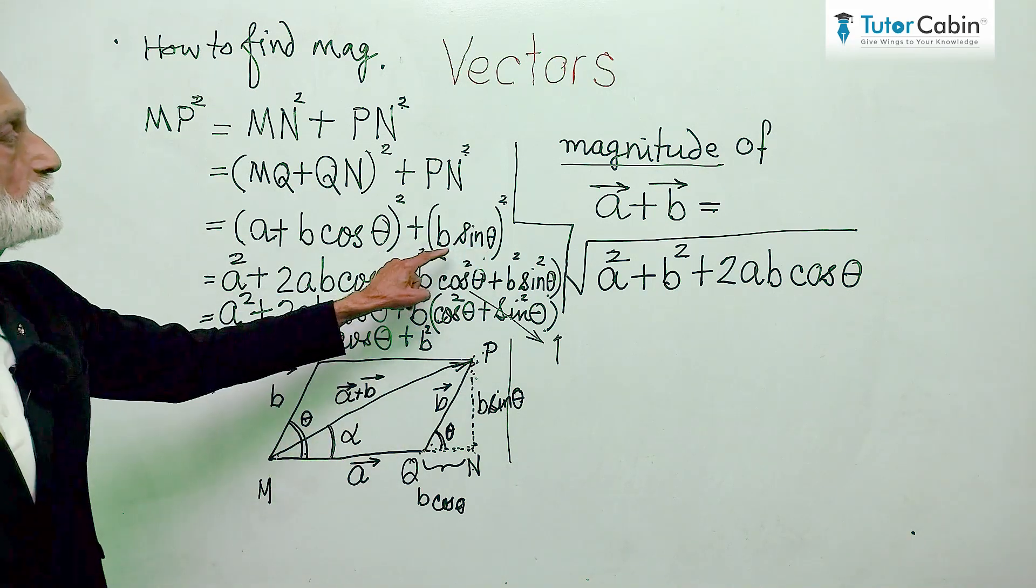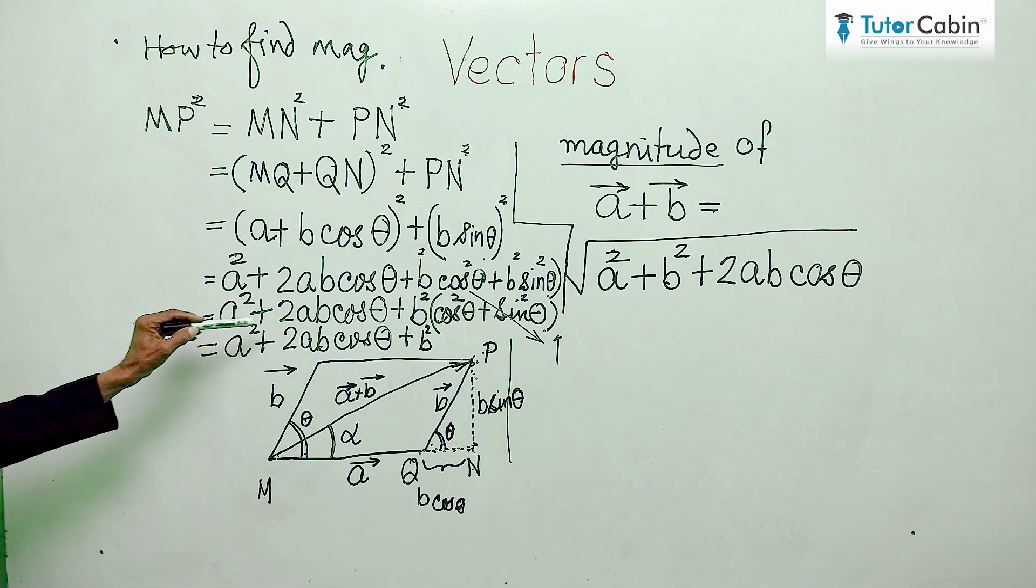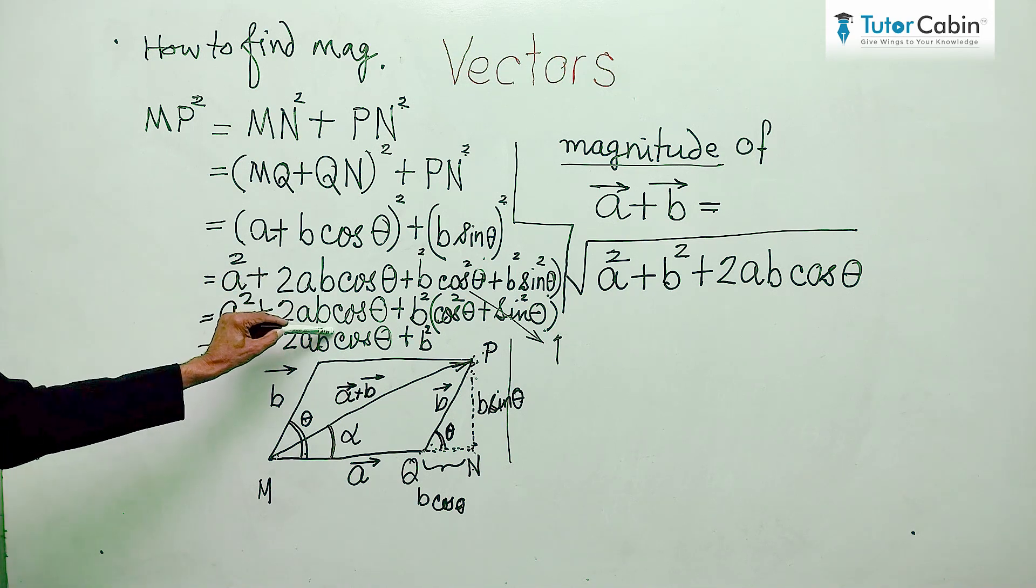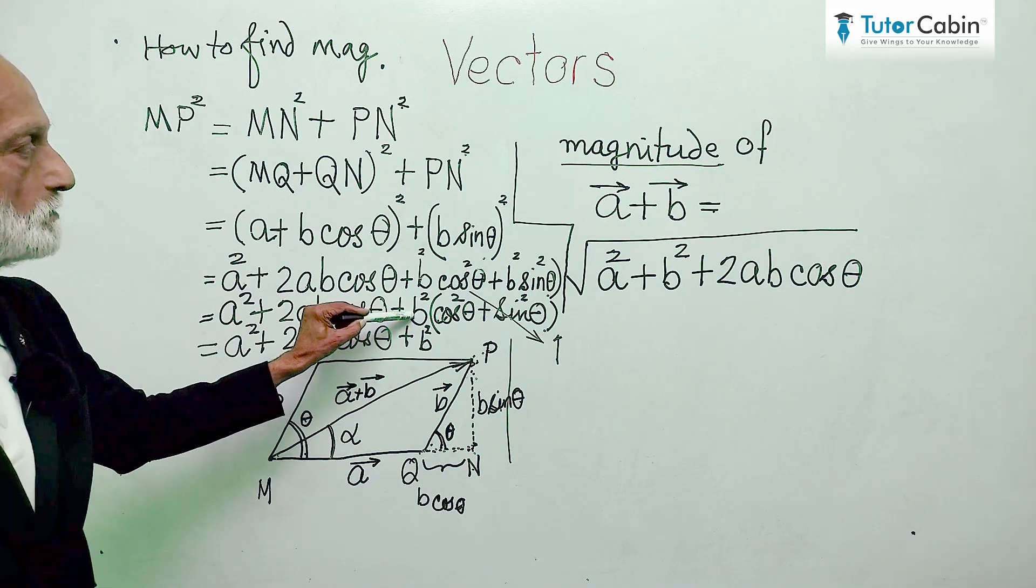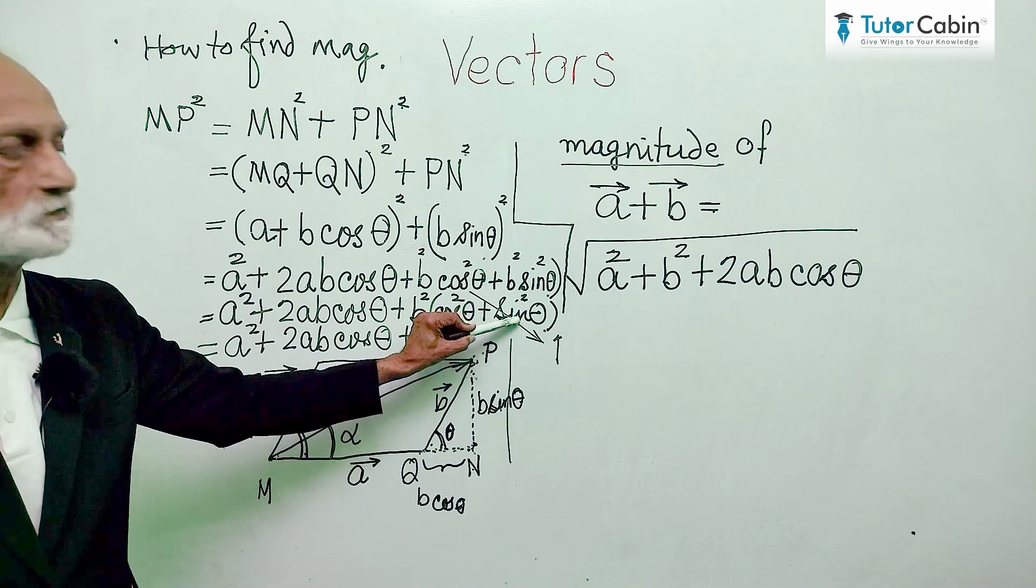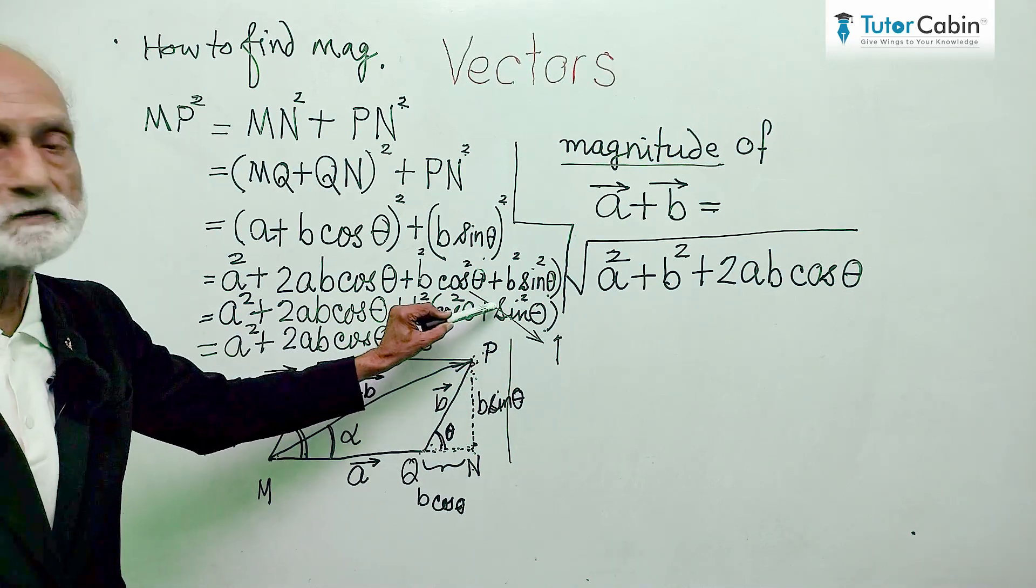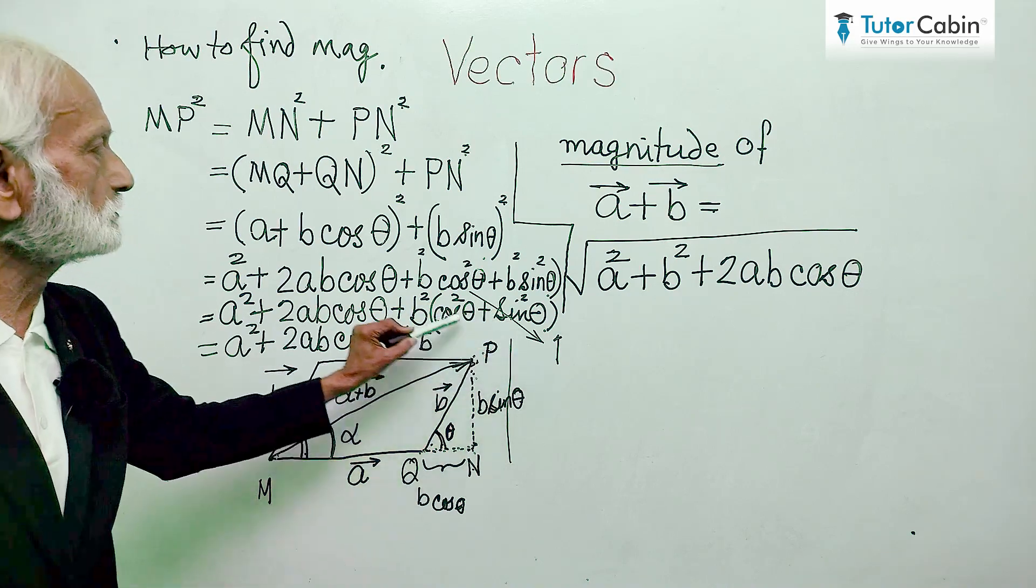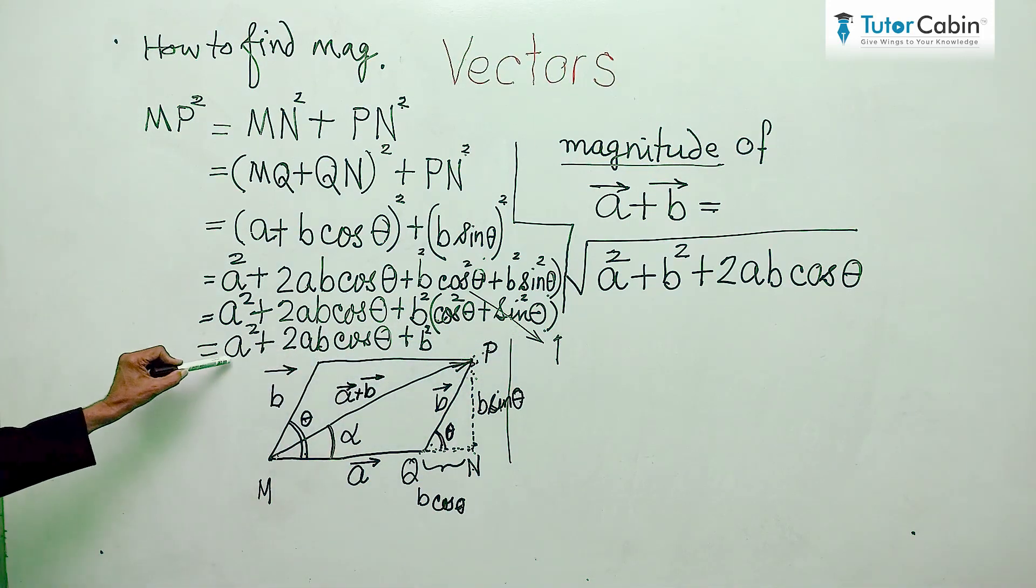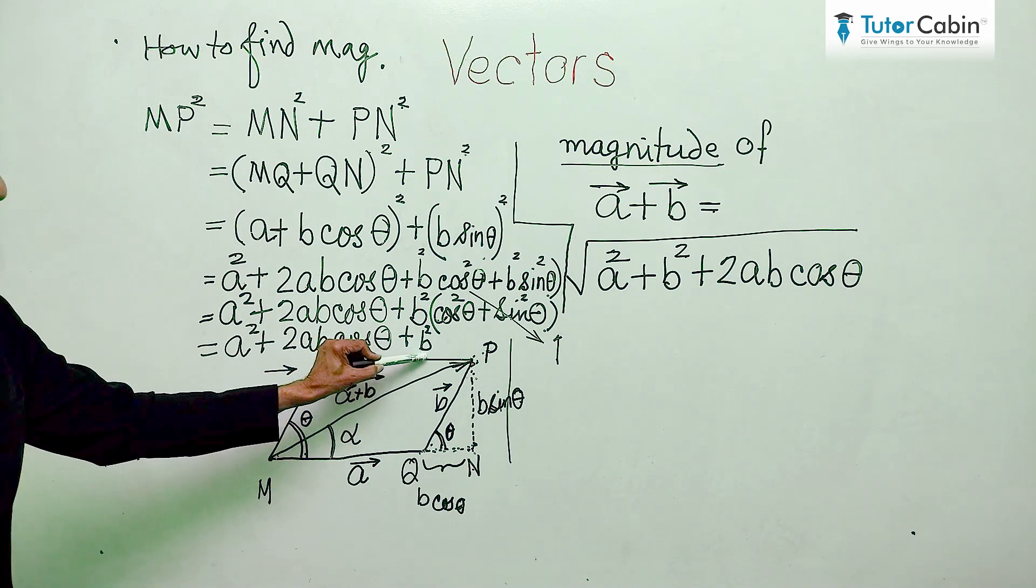Similarly, b square sin square theta. Now, this came as it is, this came down as it is, and here we took the b square common. So, in bracket there remain cos square theta plus sin square theta. We know that sin square theta and cos square theta is equal to 1. So, this got converted into 1 and finally we got a square plus 2ab cos theta plus b square.